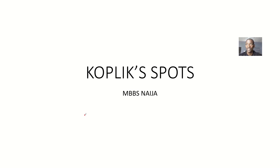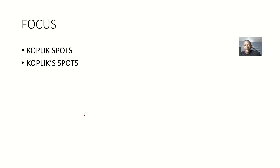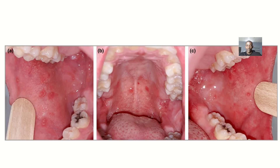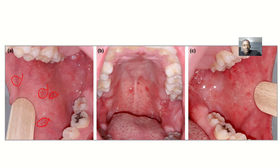Let's quickly talk about Koplik spots. These are spots that you actually see in measles, in people that have measles. Some people call it Koplik spots — it's still the same thing. Mostly you find Koplik spots in the buccal cavity. You can see all these spots, all the spots you actually find in the buccal cavity.